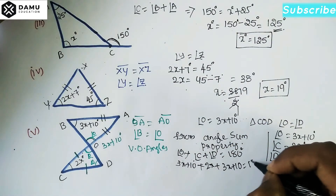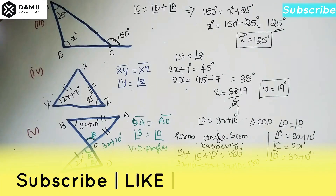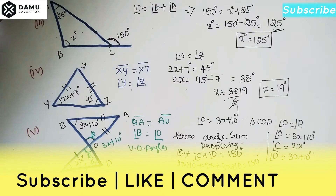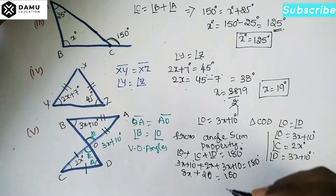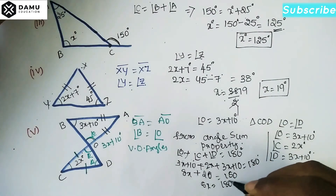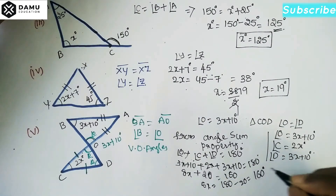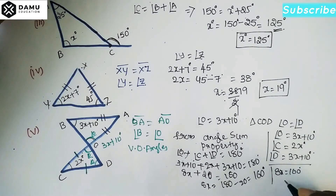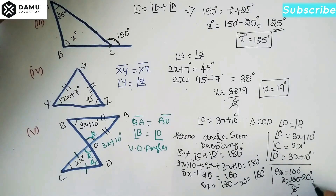So 3X plus 10 plus 2X plus 3X plus 10 equals 180 degrees. Adding the X terms: 3 plus 2 plus 3 equals 8X. Adding the constants: 10 plus 10 equals 20. So 8X plus 20 equals 180, giving 8X equals 160, and X equals 160 divided by 8, which is 20 degrees. Thanks for watching, please subscribe.